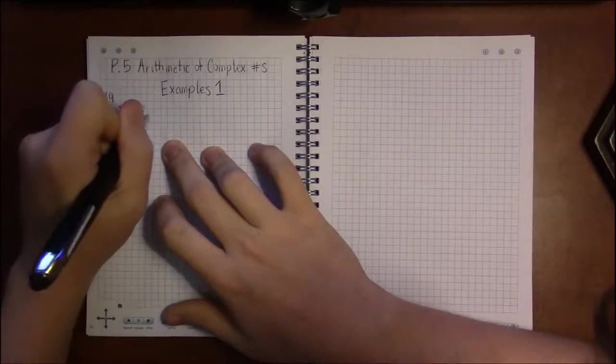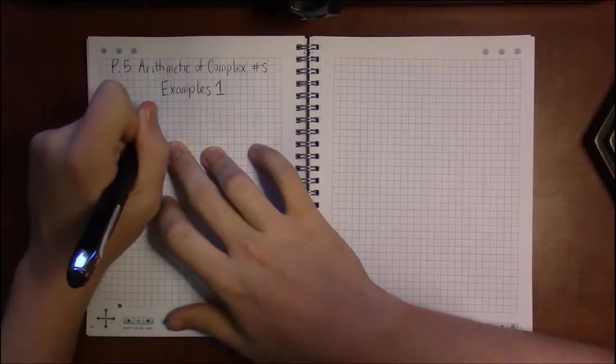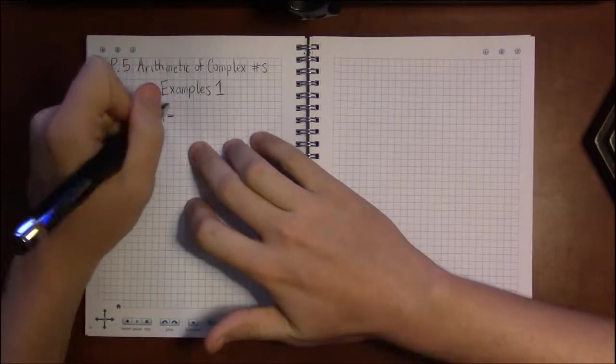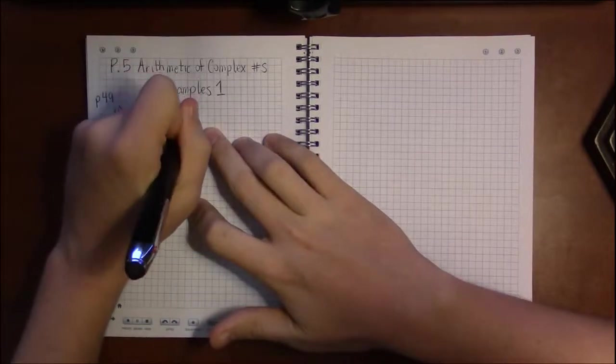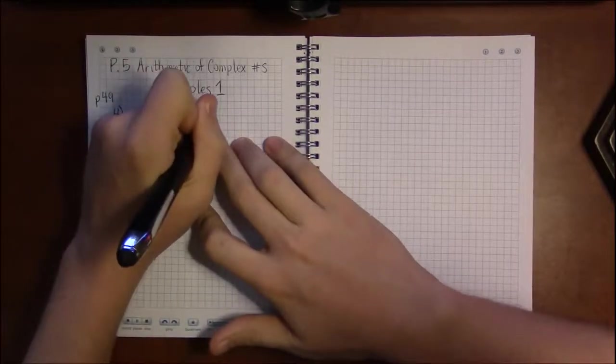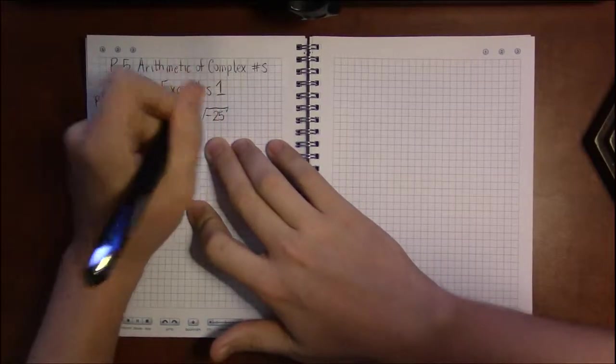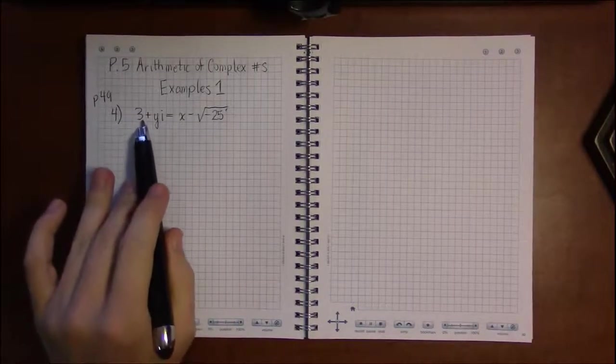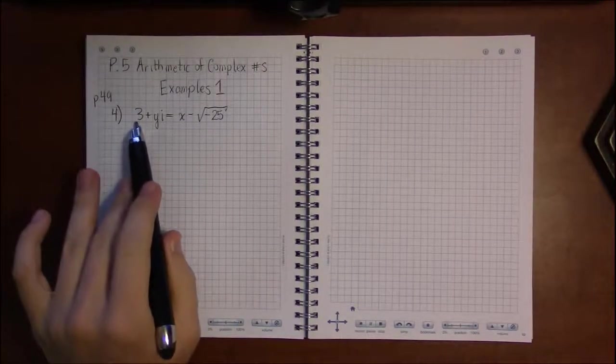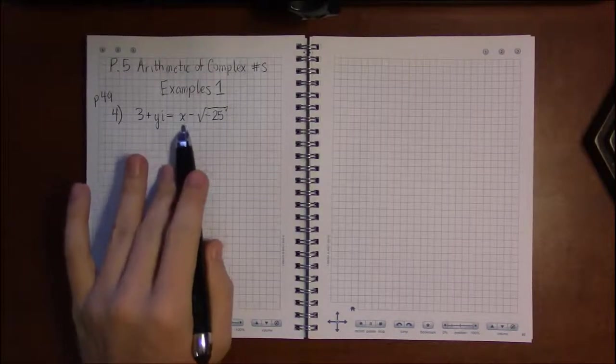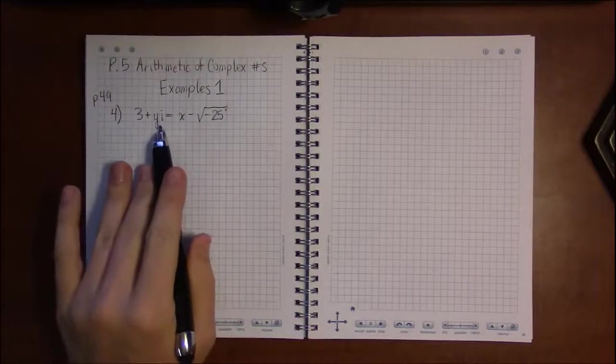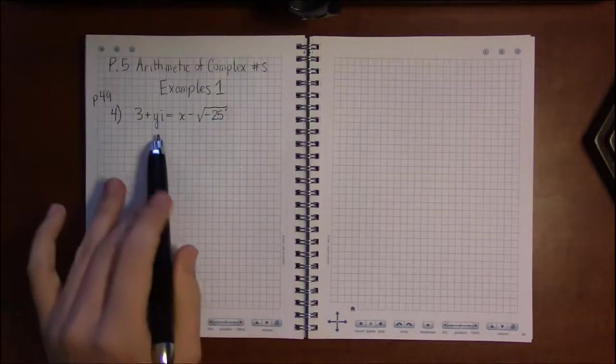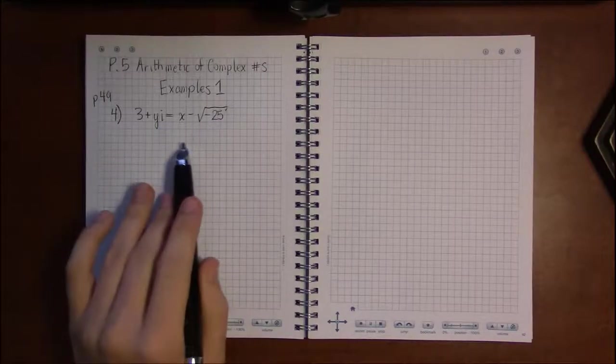So we said that two complex numbers are equal if the part without the i on the left is equal to the part without the i on the right, and the part with the i on the left is equal to the part with the i on the right. The real parts are equal, the imaginary parts are equal.